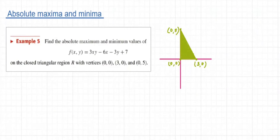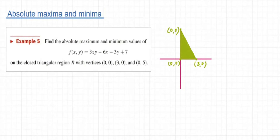Good morning everyone. In today's session we will be discussing a problem from absolute maximum and minimum values. The question is: find the absolute maximum and minimum values of f(x,y) = 3xy - 6x - 3y + 7 on the closed rectangular region with vertices (0,0), (3,0), and (0,5). The triangle is shown on screen. Now let's move to the solution.